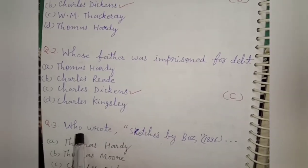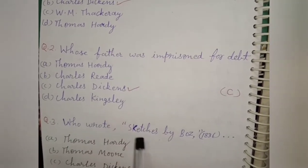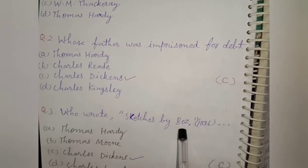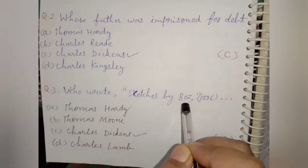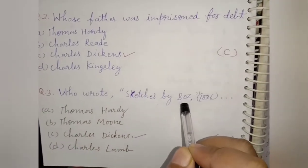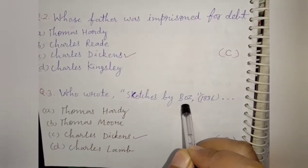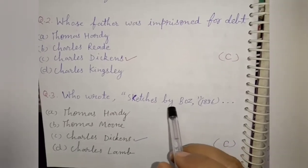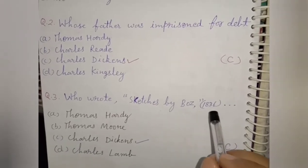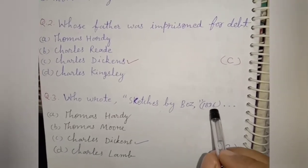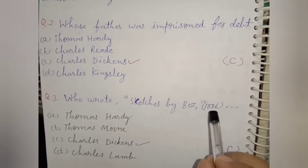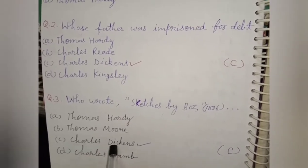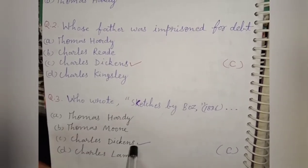Next question: Who wrote Sketches by Boz? This was the primary writing of Charles Dickens, and it was written in 1836. The right option is option C, Charles Dickens.